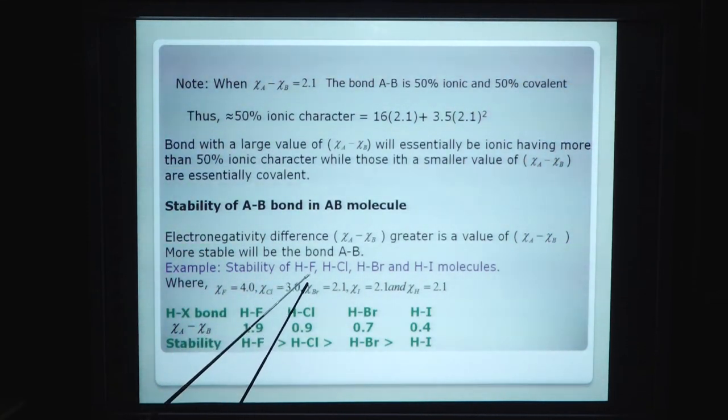For example, stability of HF, HCl, HBr, HI molecules. Chi-F is 4.0, chi-Cl is 3.0, chi-Br is 2.8, chi-I is 2.5, and chi-H is 2.1. Then for bond HX like HF, HCl, HBr and HI, chi-A minus chi-B values we calculate come to 1.9, 0.9, 0.7 and 0.4 respectively. For stability, the greater the value, the more stable. HF is more stable than HCl, and HCl is more stable than HBr, and HBr is more stable than HI.